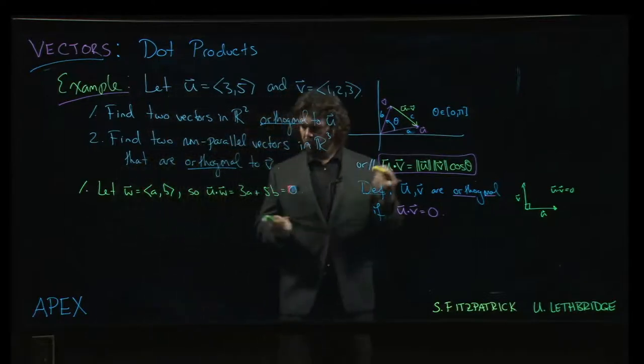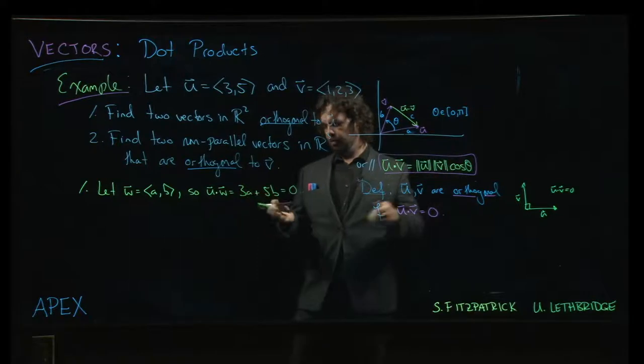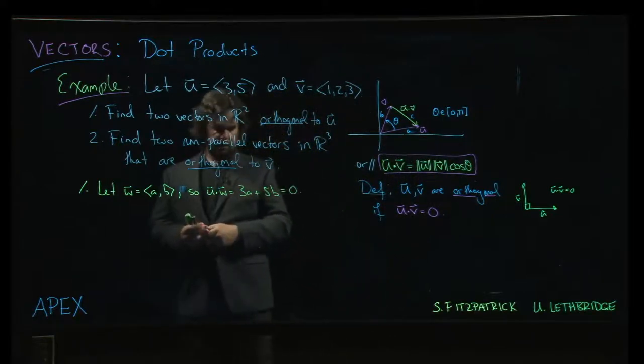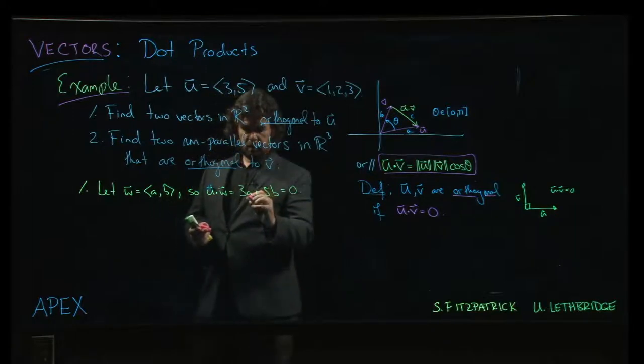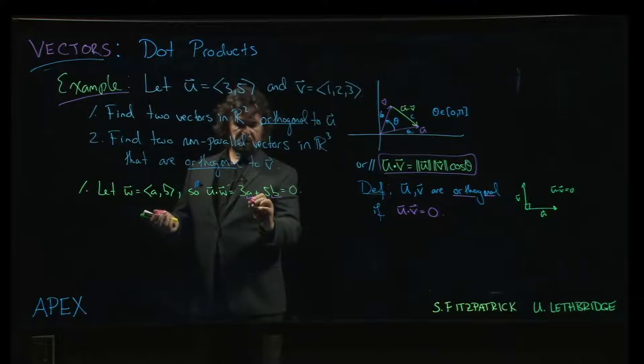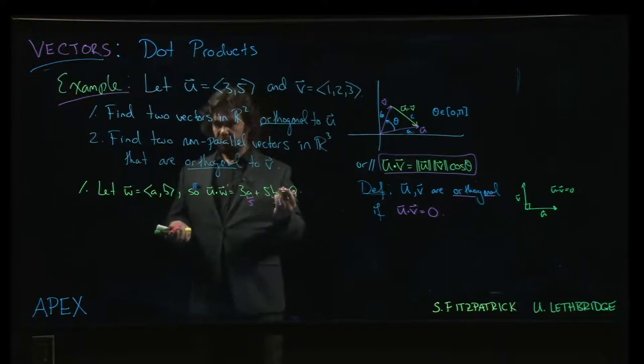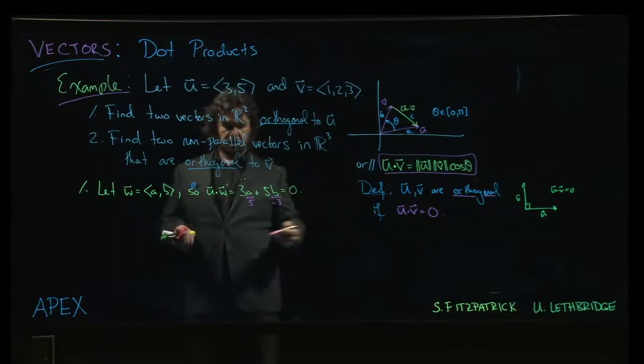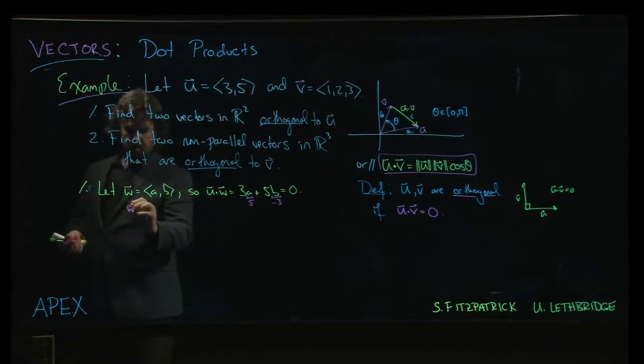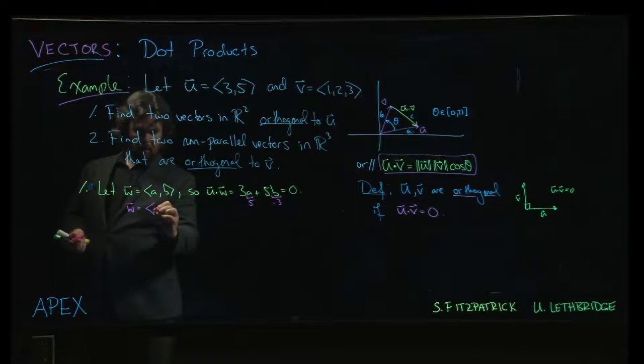We start thinking about how to choose anything for a and b to guarantee we get zero. There's one surefire way to do it, which is to make sure that these two products we're adding together are equal but opposite. I could take a to be 5 and b to be minus 3. Then I would get 15 minus 15, which equals zero. So I could take w to be (5, -3).